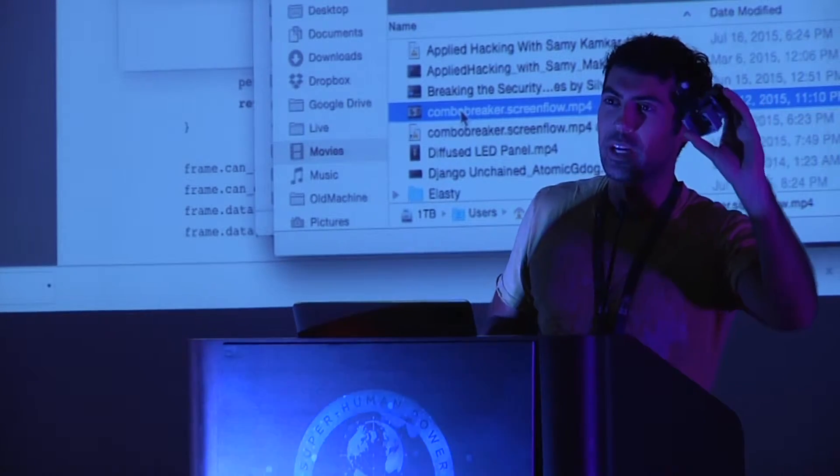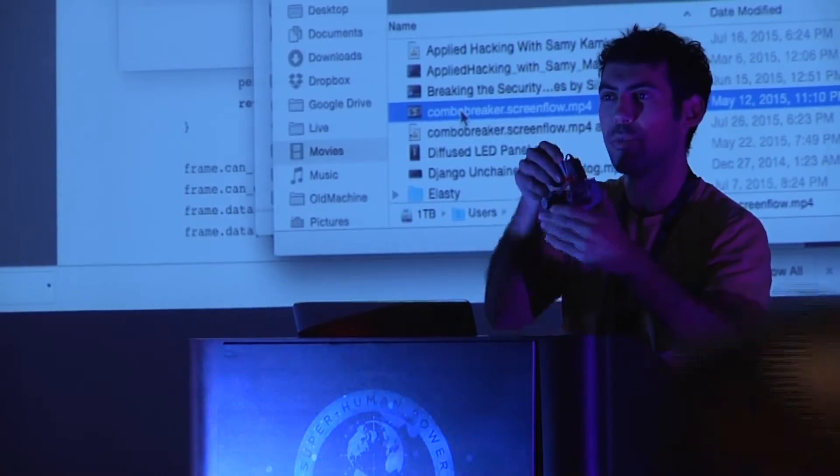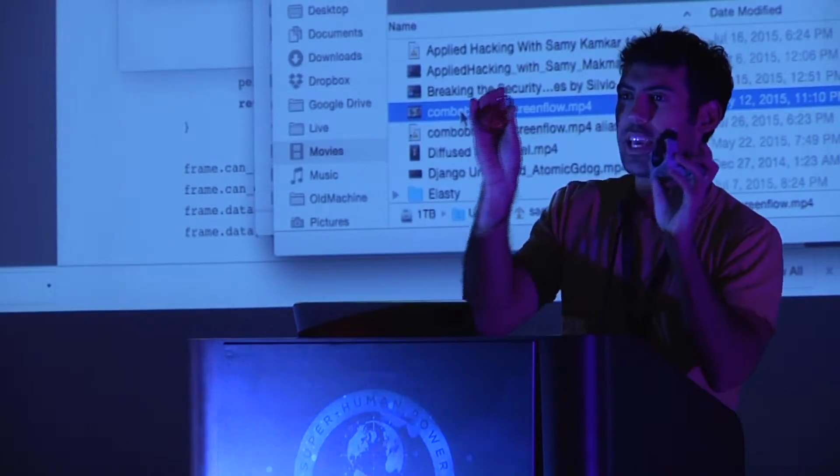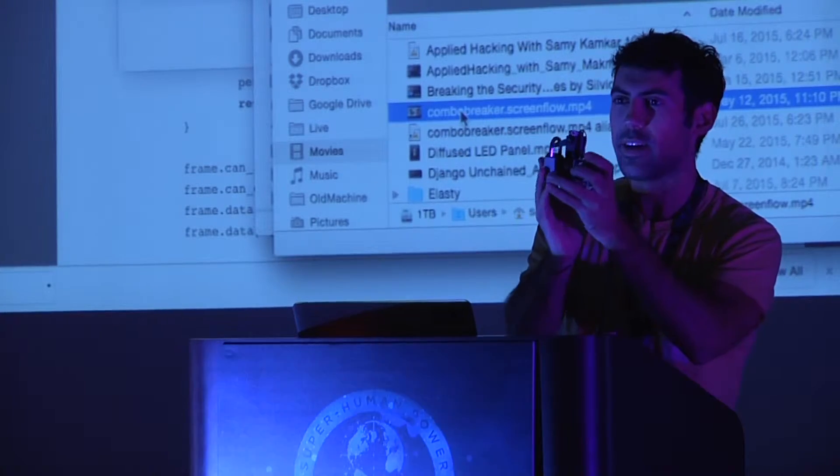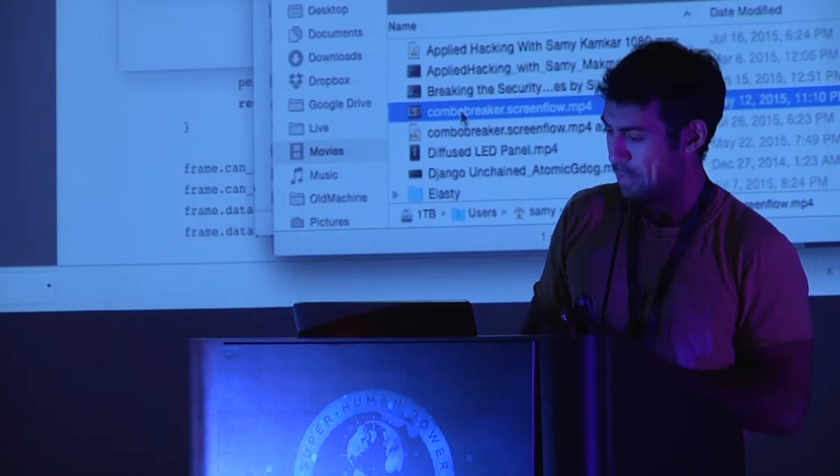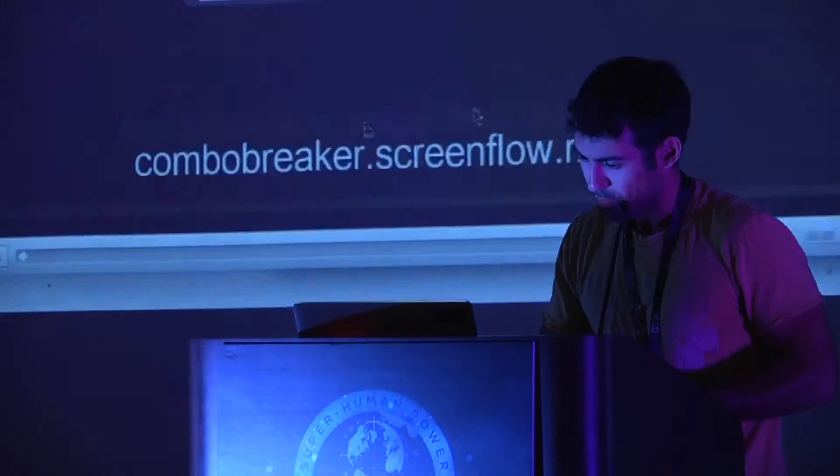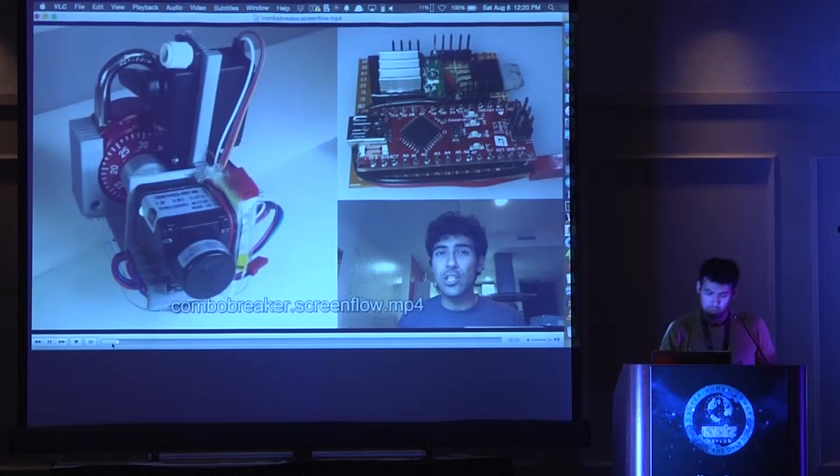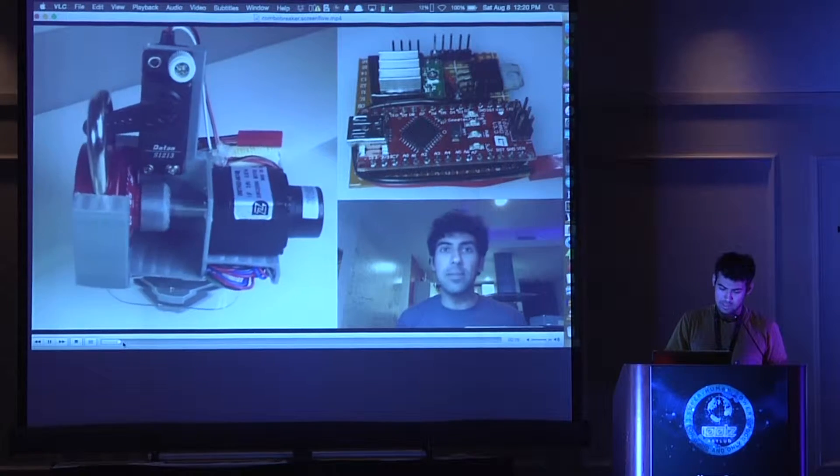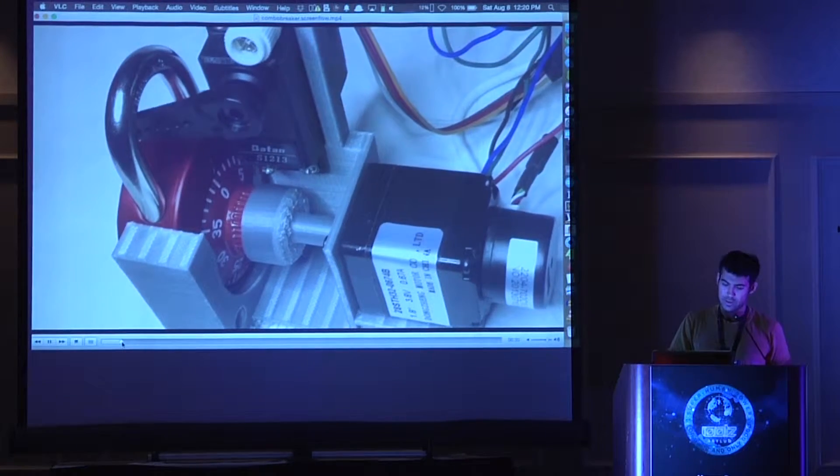So we're talking about Combo Breaker. This is a device that you can 3D print, you can use Arduino, and a couple of motors. Together you can take a master combination lock, any master combination lock, put it inside the device, and the device will crack it for you. I'll show you a little video here, and you can also build this. I've put everything on YouTube.